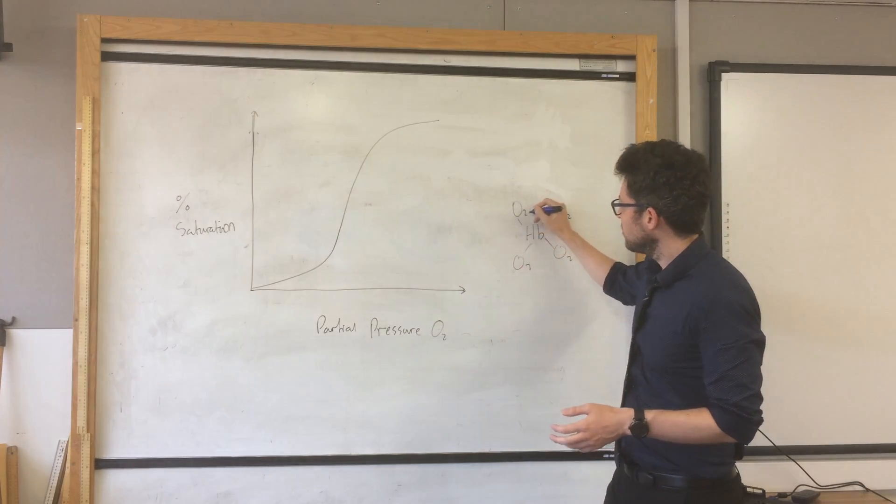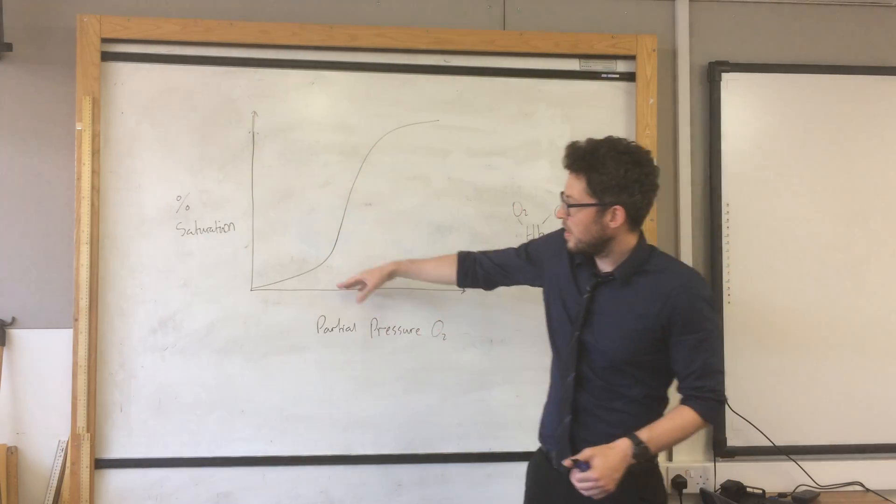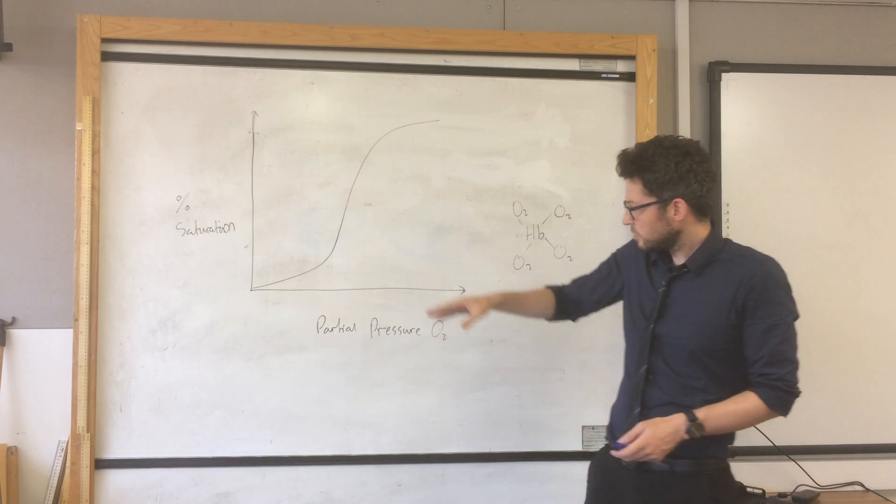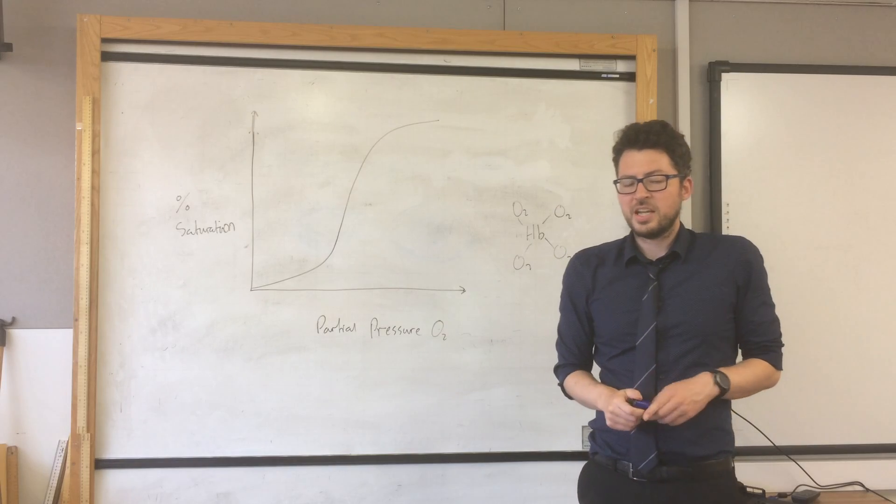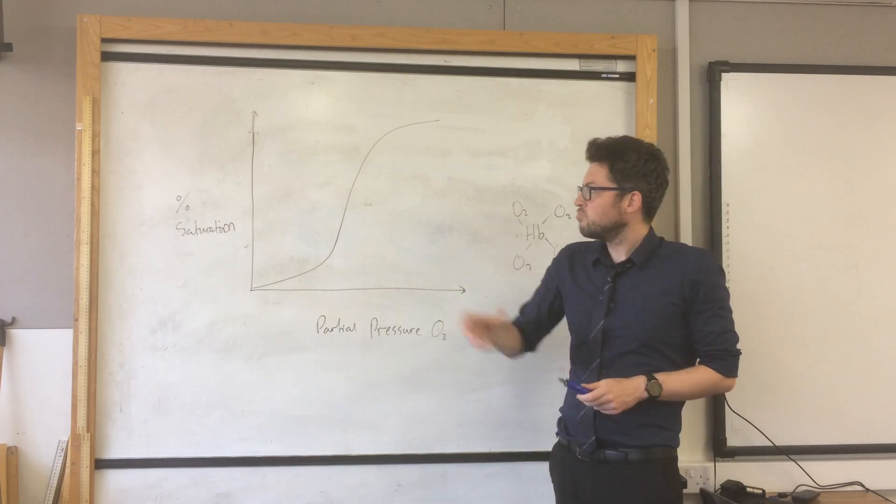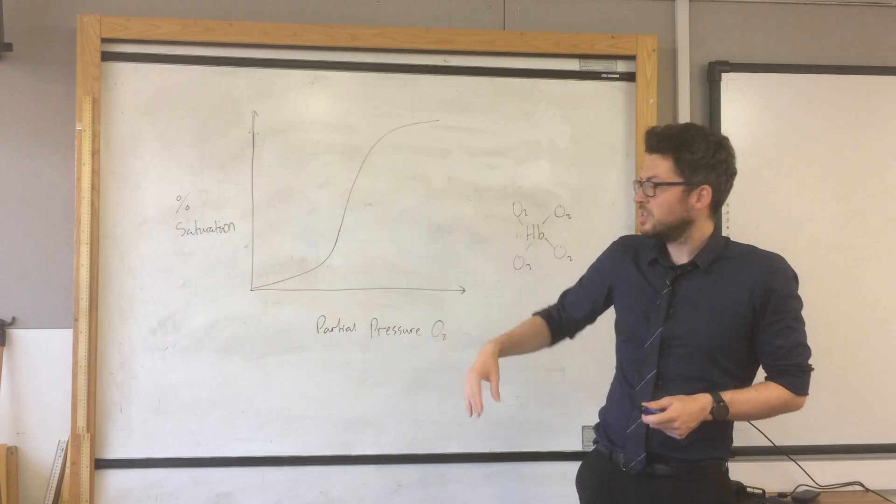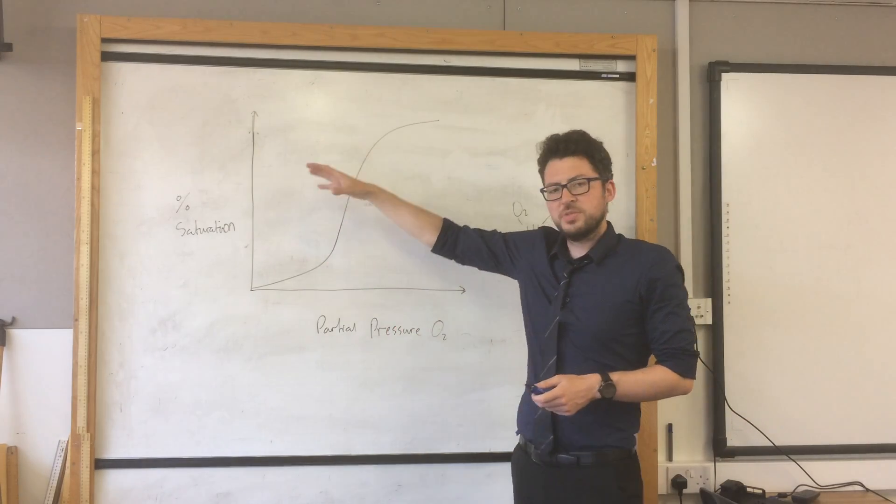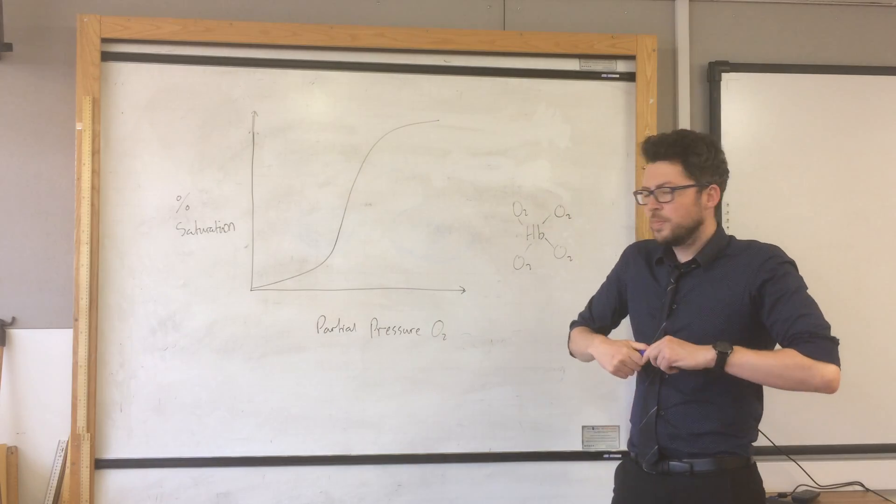Which is why we get this increase in the rate at which the saturation occurs. So that's why we have that shape. And hemoglobin is very well adapted to carry oxygen, and roughly in the partial pressure of oxygen that we find in the lungs, that would lead to approximately 100% saturation, which shows how well adapted the hemoglobin is in humans.